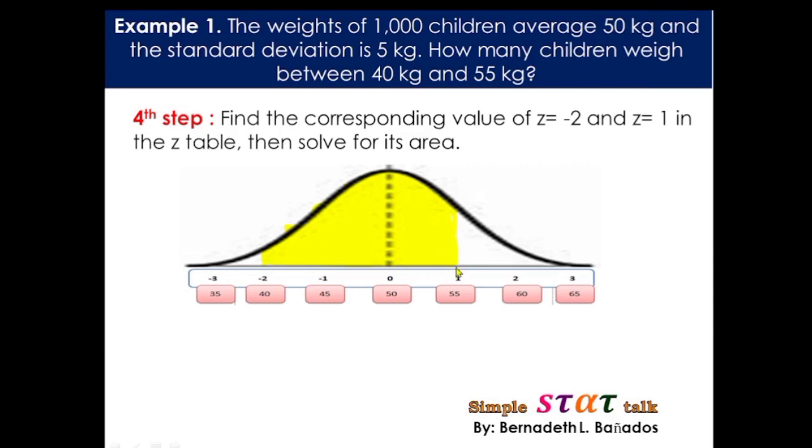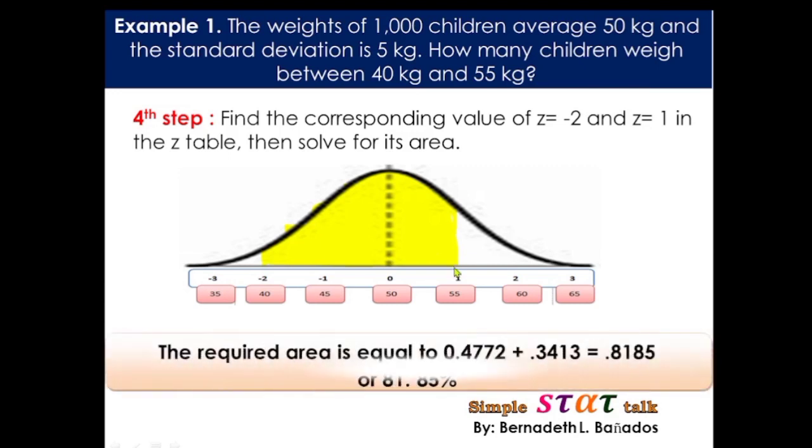By looking at the area, yung value na nakikita natin doon sa z-table for negative 2 is starting from 0 to negative 2. The question, are we going to subtract or are we going to add? Of course, based on the graph, it suggests that we are going to add the two values. So, 0.4772 plus 0.3413. 0.4772, yan yung value ni 0 to negative 2, and 0.3413, yan yung value from 0 to positive 1. We really need to add these two values. And it gives us a value of 0.8185 or simply 81.85%.